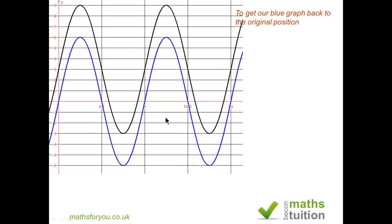Now the black graph is the original graph given to us. So in order to get the blue graph which has the equation 6 sin 2x to coincide with the original graph, we need to move the blue graph 3 units upwards, vertically upwards and parallel to the y-axis.